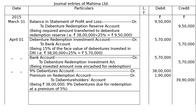Then we have to redeem the debentures: 9% Debentures account debited ₹38 lakh. The second sentence tells us the debentures were redeemable at a premium of 5% on 30th June 2015. Premium on Redemption of Debentures account debited to Debenture Holders account, the date being 30th June. Being ₹38 lakh 9% debentures due for redemption at a premium of 5%, that is ₹38 lakh in the debit column and 5% of this is ₹1,90,000.